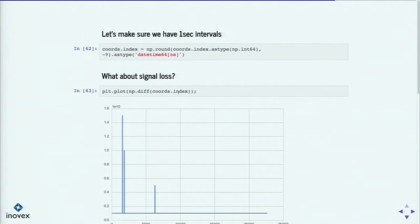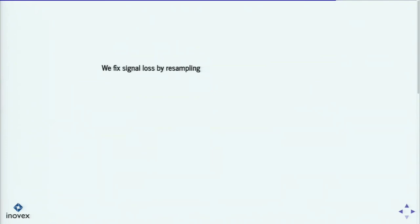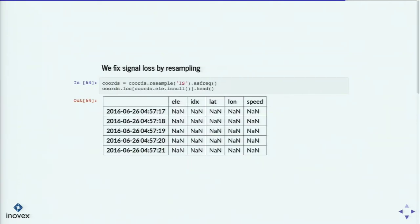We can fix this — we need to fix this, because we need a uniform time interval. We can fix this by using the pandas resample functionality with one-second resampling. We get some additional rows which are of course not available, because that's the data I missed during the time of the signal loss. But we need it — the Kalman filter is going to help us fill these values. I also plotted the signal loss points to get an idea of where the signal loss was. Here was a tunnel, for instance — just to double check.